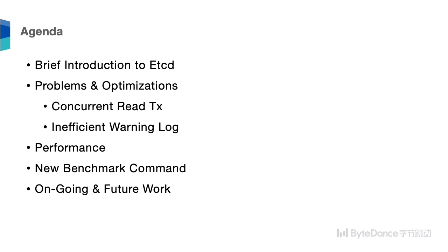Before we start, let me first cover today's agenda. The first part is a brief introduction to etcd, and the second part is about the problems and optimizations in etcd 3.5. Today we're going to cover two of them: the first one is about concurrent read transactions, and the second is about inefficient warning logs. After that, we will cover the performance changes in 3.5, then mention the new benchmark command we added to the etcd repository, and finally talk about ongoing and future work.